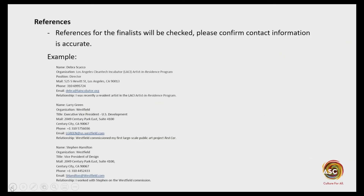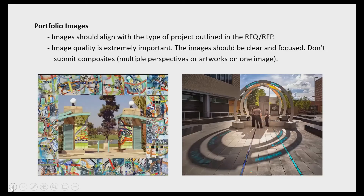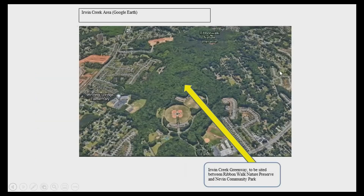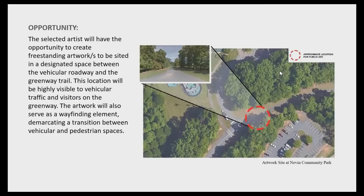Question from Chalise: when do you need to get insurance — not before you're approved, correct? That's right. As soon as you get the agreement, you sign it, and ASC will need to be added as additional insured. We'll need a certificate of insurance delivered to us in the early phases of the project — it's something like 30 days specified in the contract.